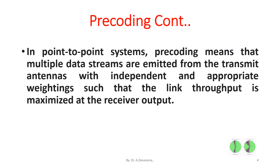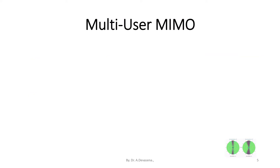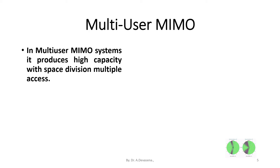In point-to-point systems, pre-coding means that multiple data streams are emitted from the transmit antennas with independent and appropriate weightings such that the link throughput is maximized at the receiver output. In multi-user MIMO, the data streams are intended for different users, known as SDMA, under some measure of the total throughput.